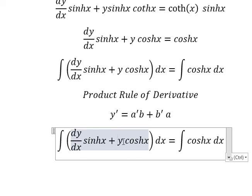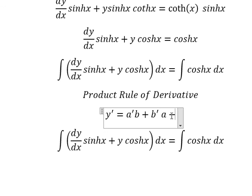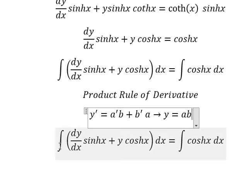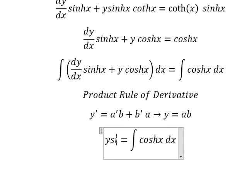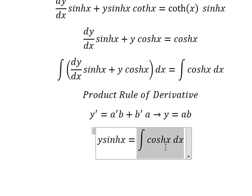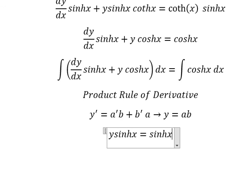We have y equals ab. So the integration of this one, we have y equals ab. The integration gives us y sinh x. This one we have sinh x and I will put c. Later we divide both sides by sinh x.